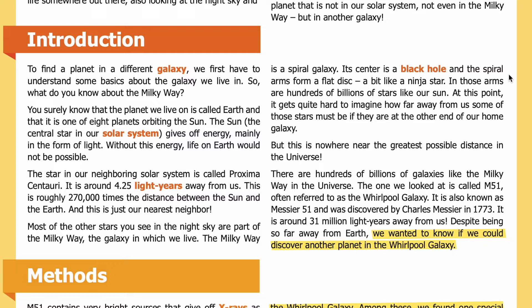The Milky Way is a spiral galaxy. Its center is a black hole, and the spiral arms form a flat disk — a bit like a ninja star. In those arms are hundreds of billions of stars like our sun. It gets quite hard to imagine how far away some of those stars must be. But this is nowhere near the greatest possible distance in the universe — there are hundreds of billions of galaxies like the Milky Way in the universe.